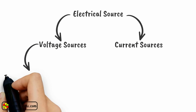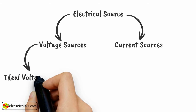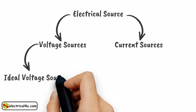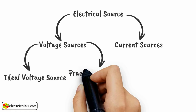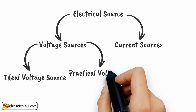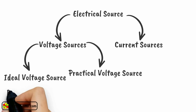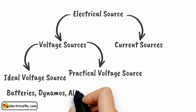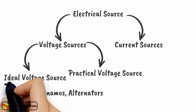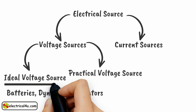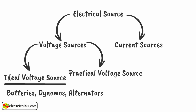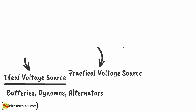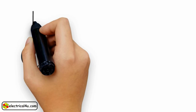Voltage sources are further categorized as ideal voltage source and practical voltage source. Examples of voltage sources are batteries, dynamos, alternators, etc. An ideal voltage source is defined as the energy source which gives constant voltage across its terminals irrespective of current drawn through its terminals. The symbol of ideal voltage source is shown here.